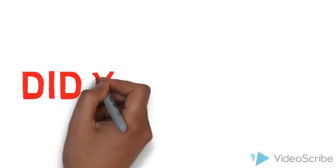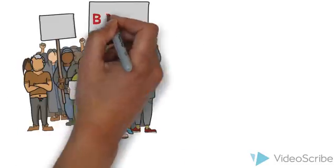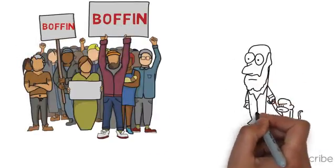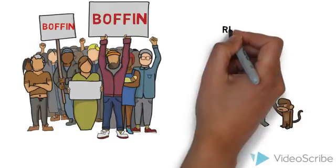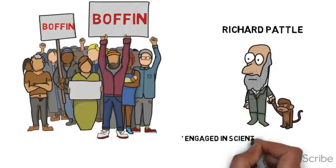Did you know, Richard Paddle was actually referred to as a boffin. A boffin is known as a person who is engaged in scientific research in an area of science that is completely and highly complex.